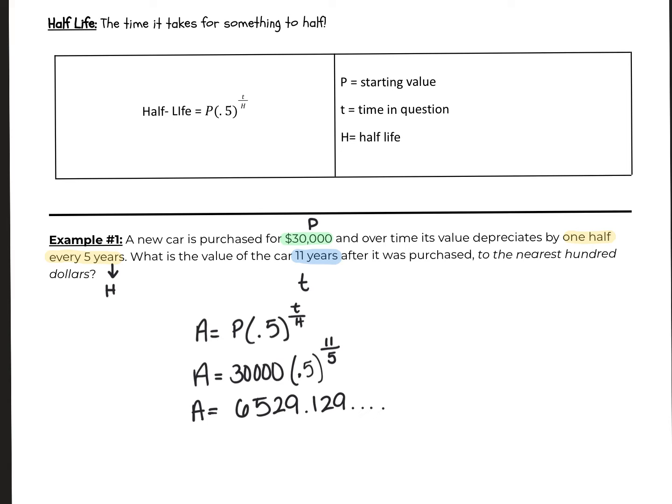Now it's not asking for the nearest hundredths, it's saying nearest hundred dollars. So this says 6,529. Since the 29 is not bigger than 50, we're going to leave it as 6,500. If the 29 was bigger than 50, then we'd round it to 6,600. So the answer to the nearest hundred is $6,500.